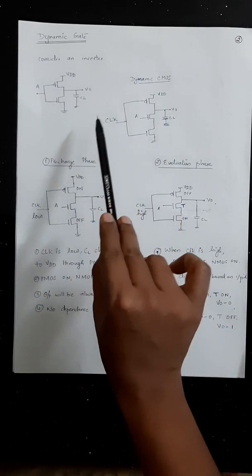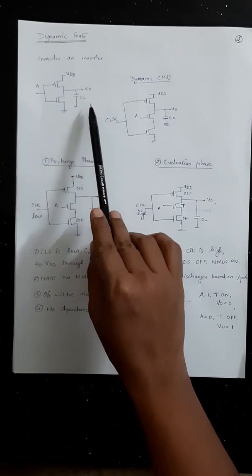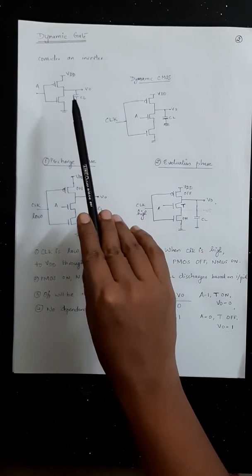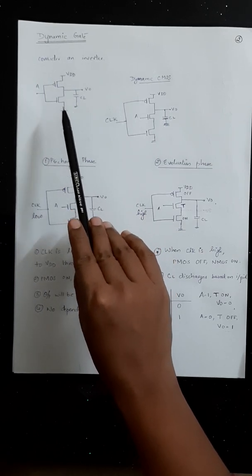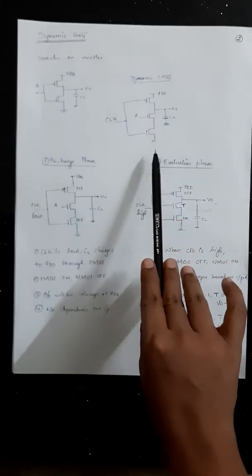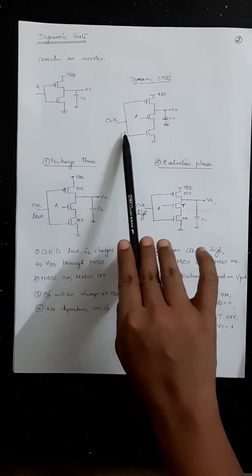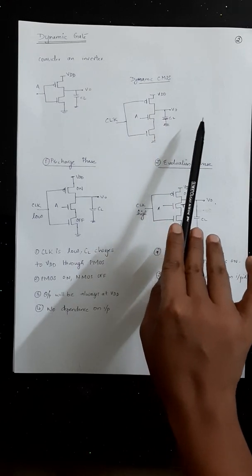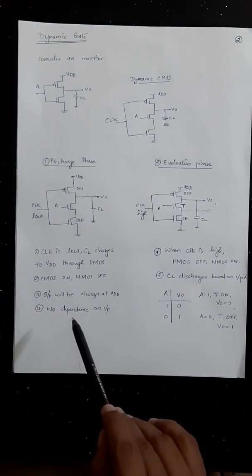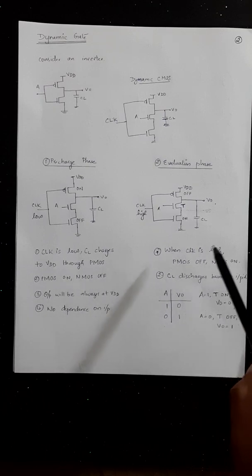This is how we draw a dynamic gate for a simple inverter. For any function, the basic concept is: draw the circuit in CMOS logic, take the NMOS section, provide PMOS and NMOS at the top and bottom for the clock, and keep the input section as it is. The working of dynamic CMOS can be explained in two phases: the pre-charge phase and the evaluation phase.